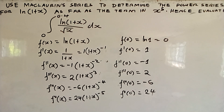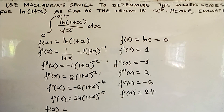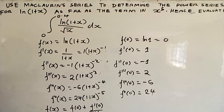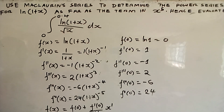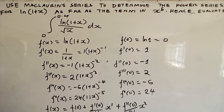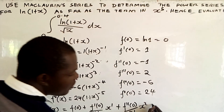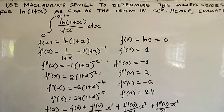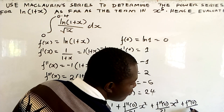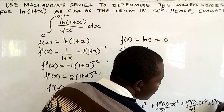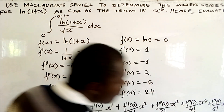The Maclaurin series: the series expansion of f(x) starts from f(0), then f'(0) over 1 factorial times x, then f''(0) over 2 factorial times x², then f'''(0) over 3 factorial times x³, f''''(0) over 4 factorial times x⁴, and the fifth derivative of 0 over 5 factorial times x⁵.